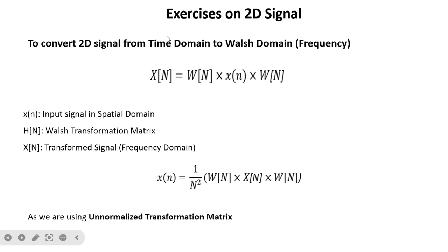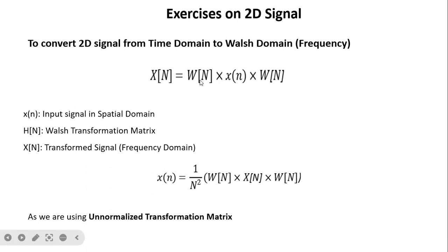Now, exercises on two-dimensional signals. When we want to convert a two-dimensional signal from the time domain to the Walsh domain, we multiply W(n) twice — once for row-wise and once for column-wise — giving the formula W(n) · x(n) · W(n). To recover the original signal we use (1/N²) · W(n) · X(n) · W(n), since we are using the unnormalized transformation matrix.